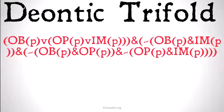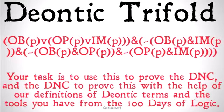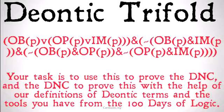The next step of the challenge is to prove this long proposition from the DNC and vice versa — it's called the Deontic Trifold. Basically, it says that our three options — obligation, optional, and impermissible — are mutually exclusive but conjunctively exhaustive. Together, any proposition has to be either obligatory, optional, or impermissible. And nothing can be both obligatory and impermissible, both obligatory and optional, or both optional and impermissible. Once again, your task is to prove the DNC from this, and use the DNC to prove this.